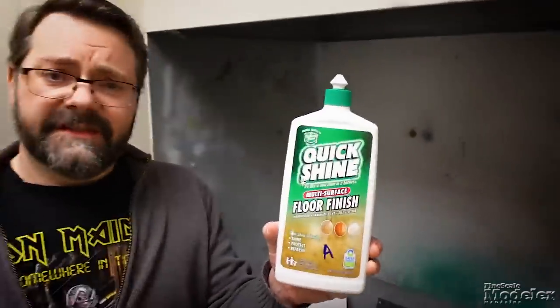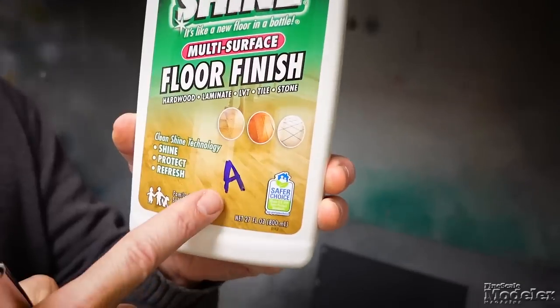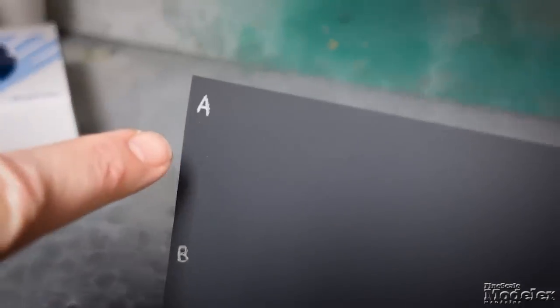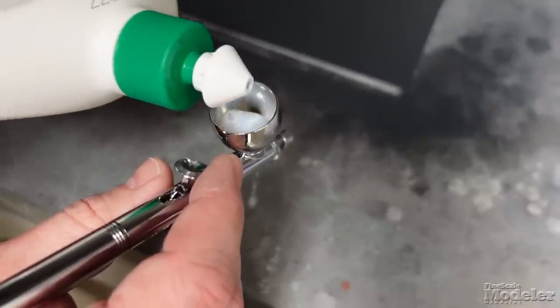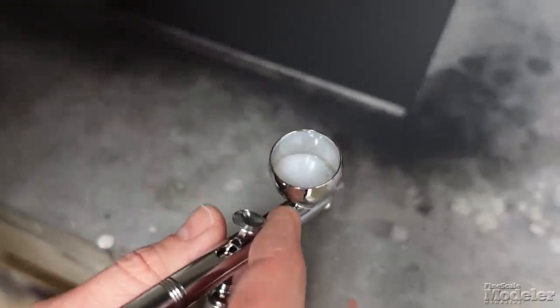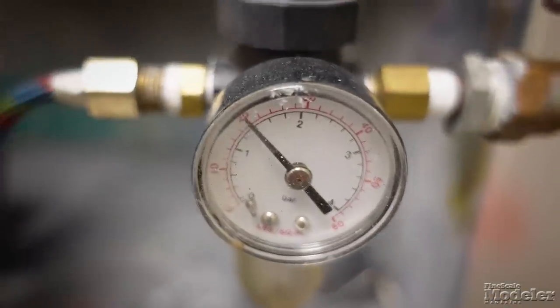First up is Quick Shine which we have labeled with an A. Comes out in a pretty milky consistency. Look at that, already coming out.